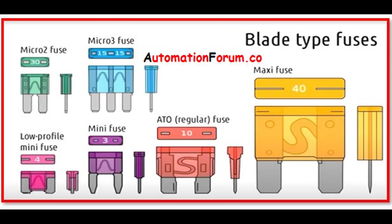Choosing the right response time for a protective device involves understanding the nature of the circuit, the type of equipment being protected, and the potential fault scenarios. Balancing the need for rapid protection against overcurrents with the desire to avoid unnecessary disruptions to normal operation is crucial. It's important to consult device specifications, guidelines, and professionals when selecting protective devices to ensure effective protection for the specific application.